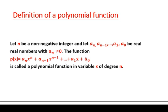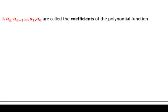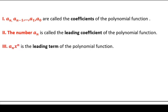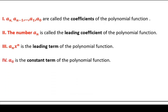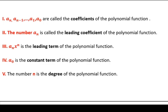a₀ is the constant term, and aₙ, aₙ₋₁, ... , a₁, a₀ are the coefficients of the polynomial function. The number aₙ is called the leading coefficient, xⁿ is the leading term, a₀ is the constant term, and n is the degree of the polynomial.